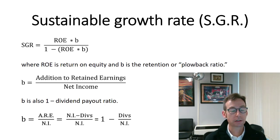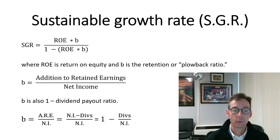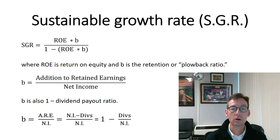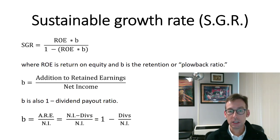So let's talk about how to calculate this. We abbreviate it SGR and we have only two variables in the calculation, so it looks fairly simple. You're probably familiar with ROE, or return on equity. And we also have B, which goes by many names. Some people call it the retention ratio, others call it the plowback ratio.